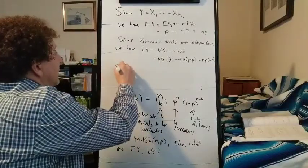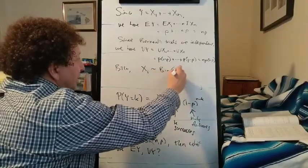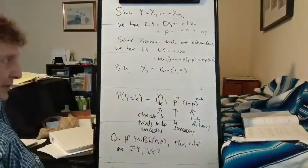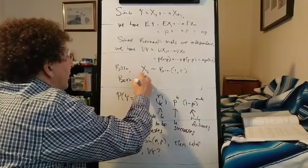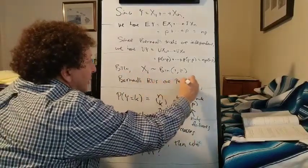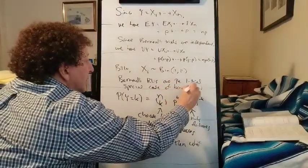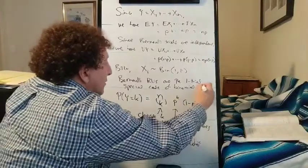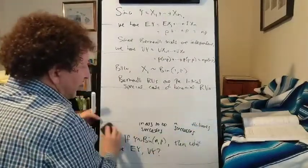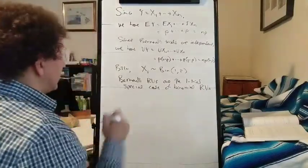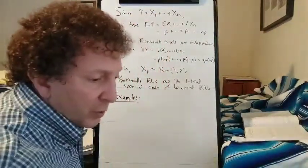We could say that each Bernoulli random variable is a binomial random variable with just one trial and probability P of success. So Bernoulli random variables are the one-trial special case of binomial random variables. Let's do some examples using the same setups we used for Bernoulli random variables.